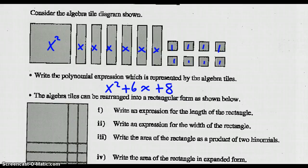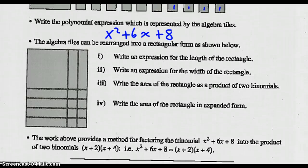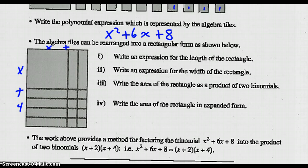Now the algebra tiles can be arranged into a rectangle as shown below. I want us to write an expression for the length of the rectangle and the width and the area and so on. So here's the length — this is x by 1, 2, 3, 4 — and this is x by 2. So the length is x plus 4, and the width is x plus 2.